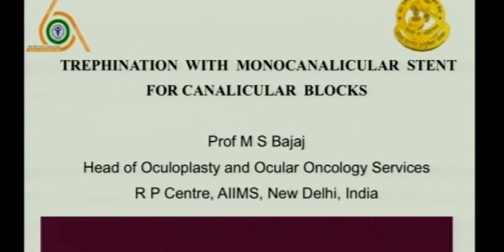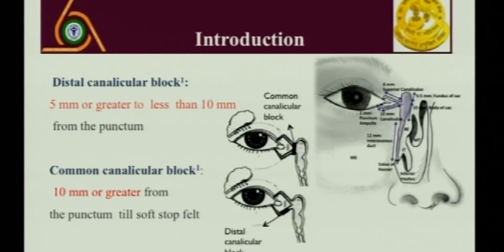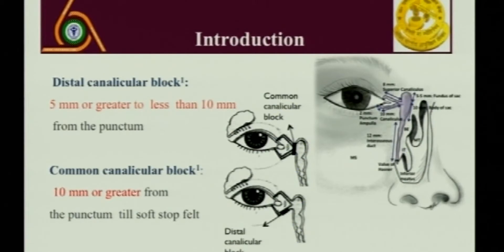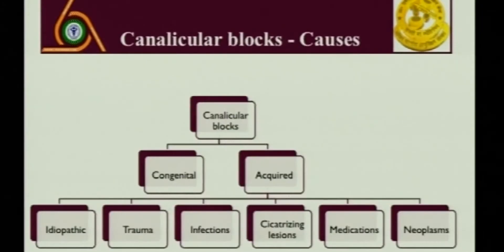As you know, the classification of canalicular blocks may be distal, proximal, or common canalicular. Various authors have given different cutoffs for proximal blocks — some call less than five millimeters proximal, some put the cutoff at eight millimeters, but five millimeters is the usual accepted distance. Canalicular blocks can be congenital or acquired; within acquired blocks you can have idiopathic, trauma, infections, lacrimal region lesions, medications, and neoplasm.